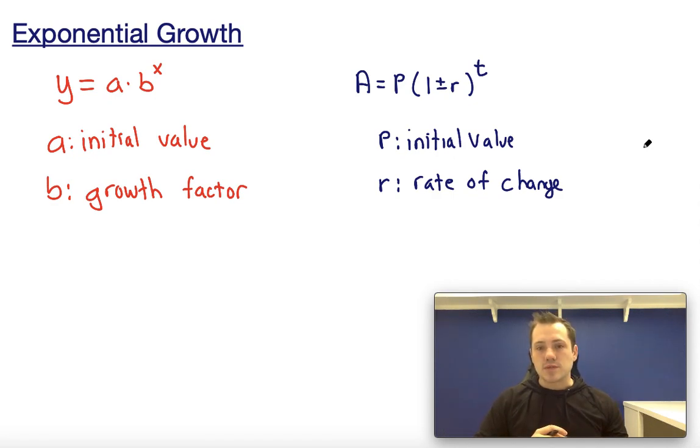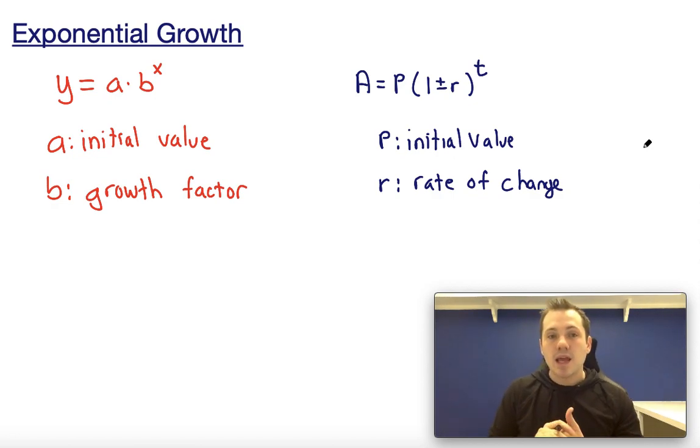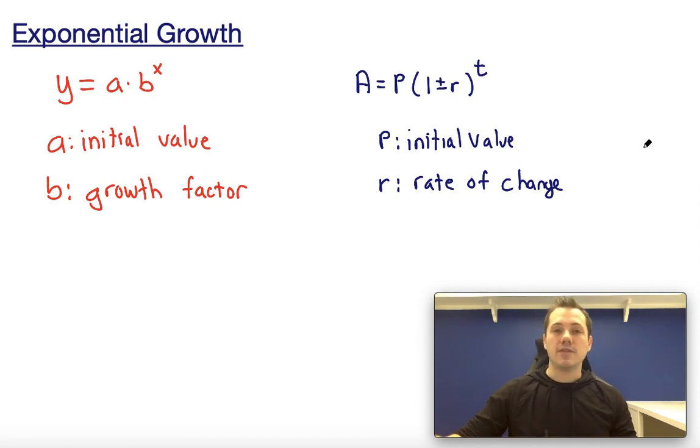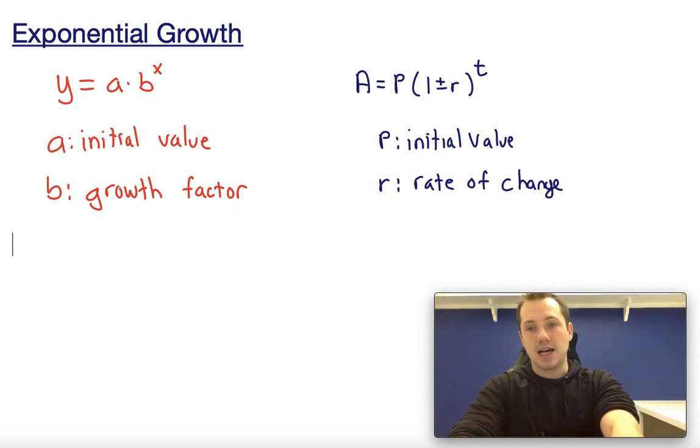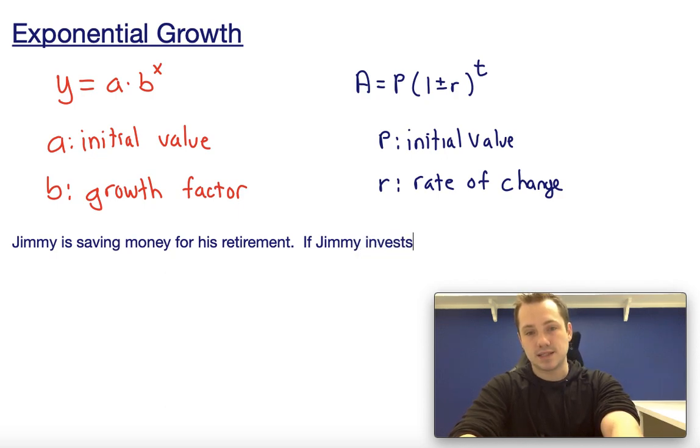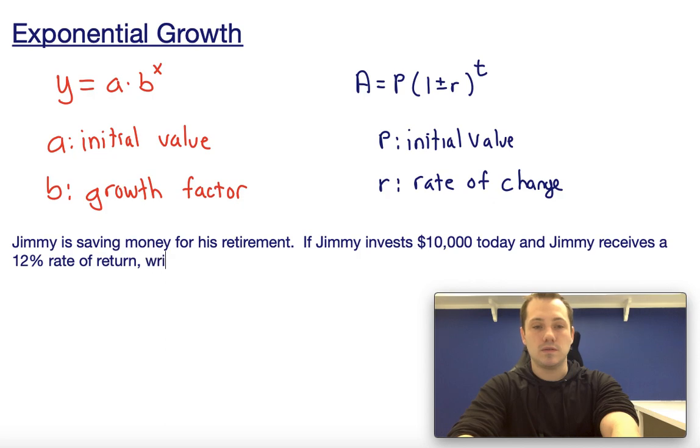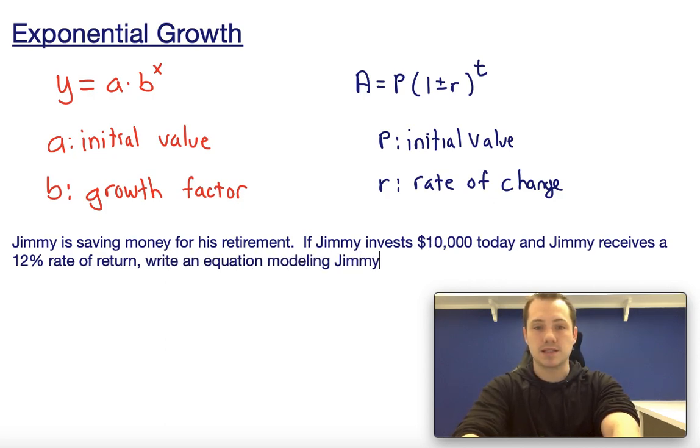So how can we use these equations? We use them with things like bank accounts paying interest rates, stock market returns, or describing something very relevant right now—the coronavirus and how quickly it spreads. Let's write out a few examples. One question might be: Jimmy is saving money for his retirement. If Jimmy invests $10,000 today and receives a 12% rate of return, write an equation modeling Jimmy's savings over time.